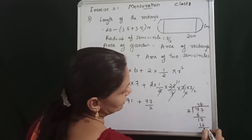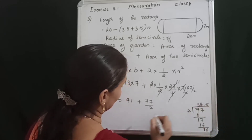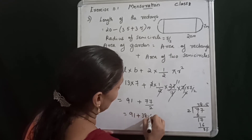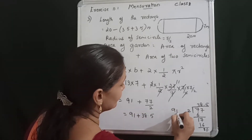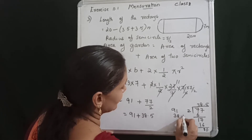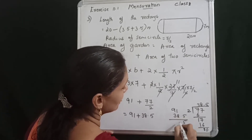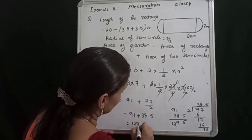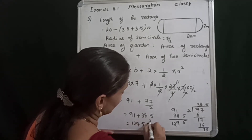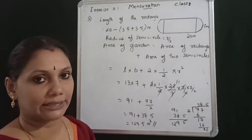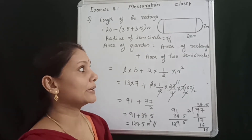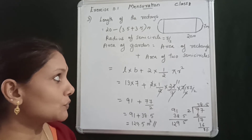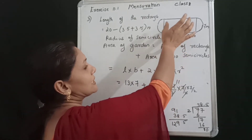Total: 91 plus 38.5 equals 129.5 m². Area of garden equals area of rectangle plus area of 2 semicircles equals 129.5 m².